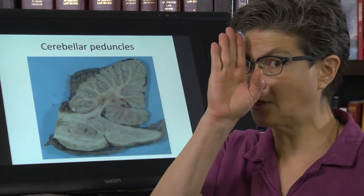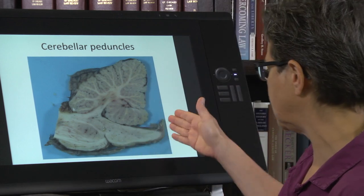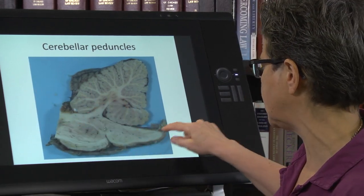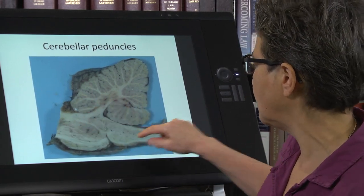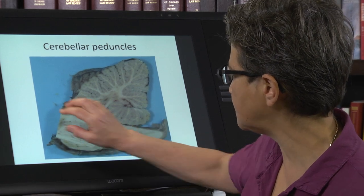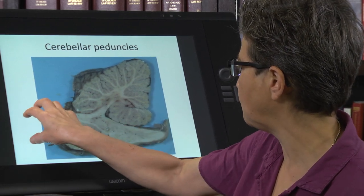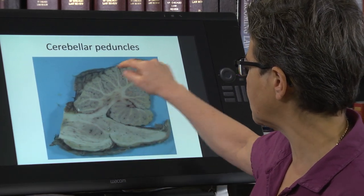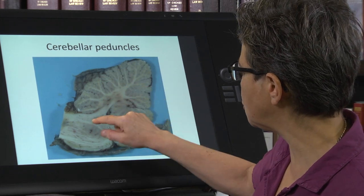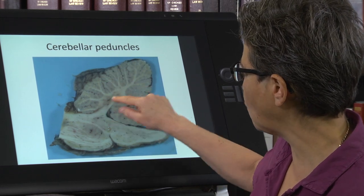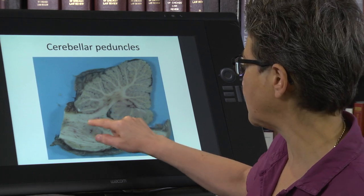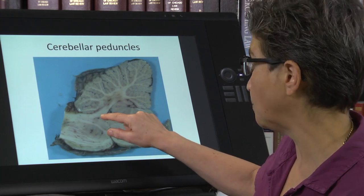What you can see here is a sagittal section — this is the back, this is the front. The spinal cord is down here, this is the medulla, here is the pons, and the midbrain would be right here. Here is the cerebellum, and you can see that it is joined by this white matter tract to the brainstem — specifically to the pons only.